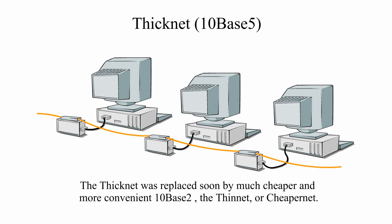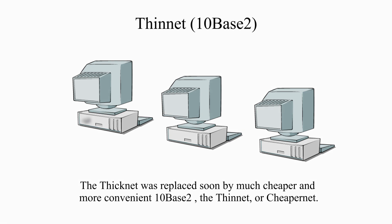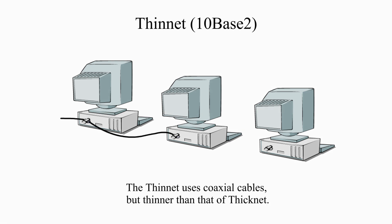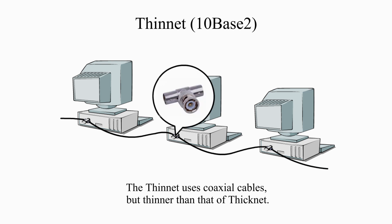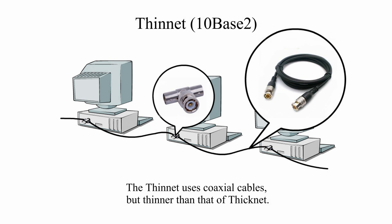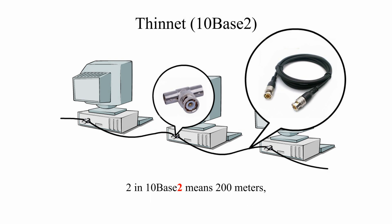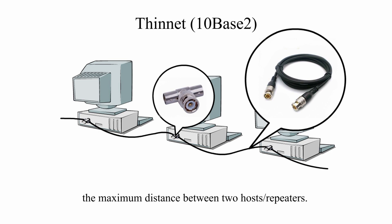Thicknet was replaced by the much cheaper and more convenient 10Base2, the Thinnet, or Cheapernet. Thinnet uses coaxial cables, but thinner than those of Thicknet. The '2' in 10Base2 means 200 meters — the maximum distance between two hosts or repeaters.